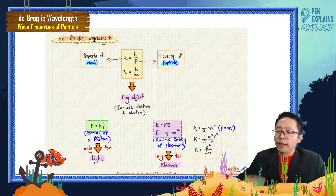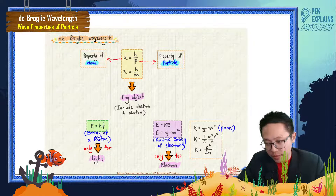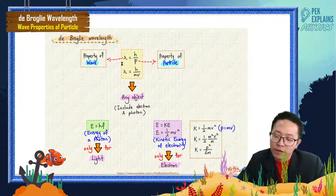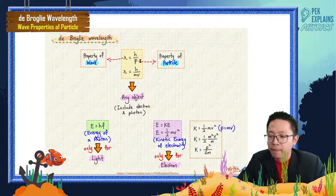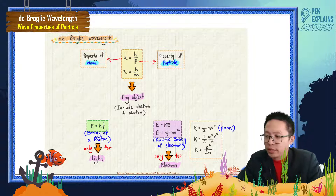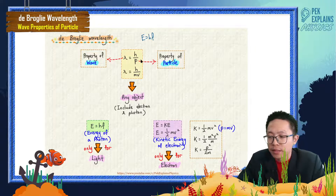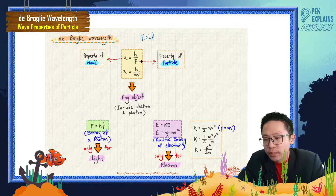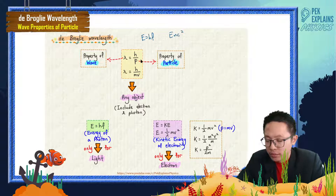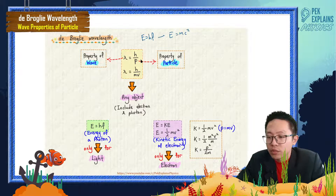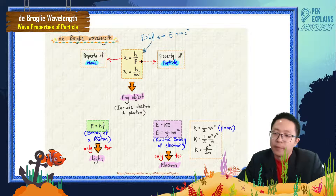The de Broglie wavelength formula states that wavelength λ is equal to h over p. This formula can actually be derived from Planck's quantum formula E = hf and also from E = mc².